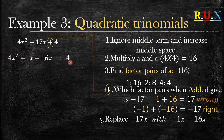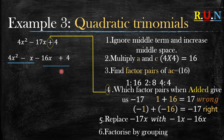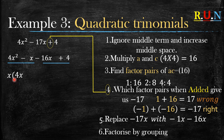Now we have four terms and we can factorize by grouping. For the first two terms, the common factor is x. So 4x² divided by x gives 4x, and negative x divided by x gives negative 1.